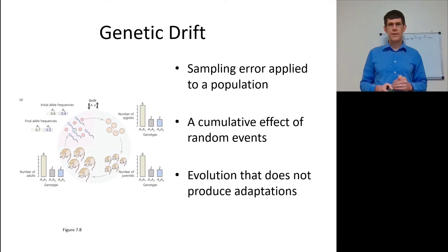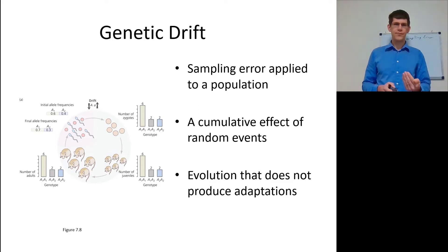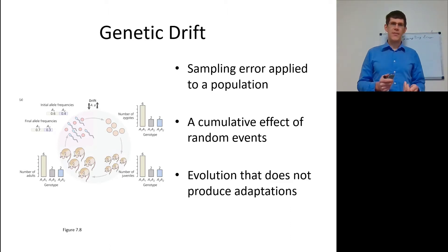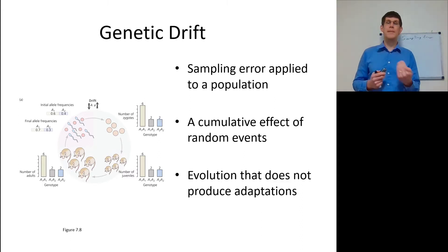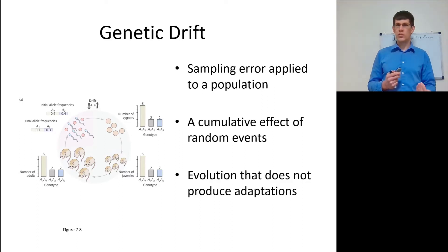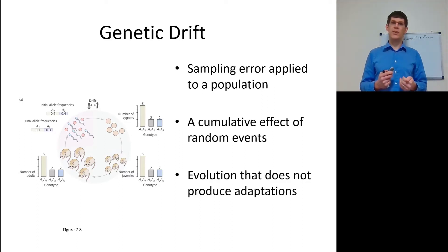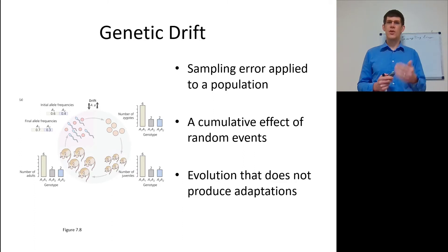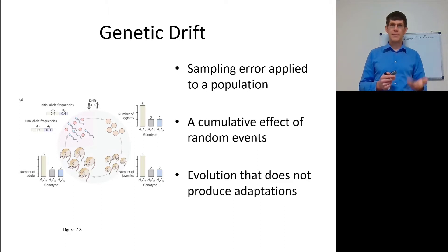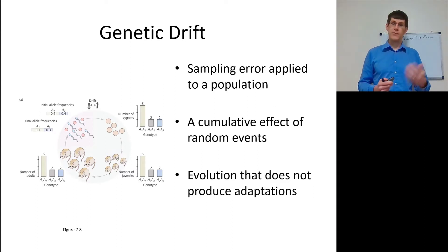These are examples of what's called genetic drift — a sampling error applied to a population. We're going to take a population of mice and at random have some of them reproduce. The allele frequency of the next generation may or may not equal the allele frequency of the original generation. If it is significantly different, we have seen a change in alleles over generations — that is evolution by genetic drift, chance alone. Since this is chance alone, it's not going to be producing adaptations. An adaptation increases the fitness of the organism that has it.